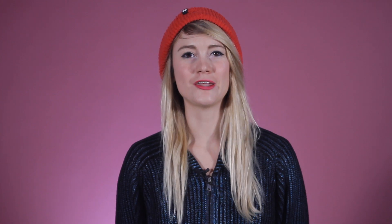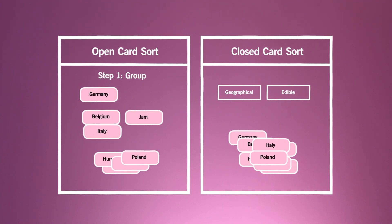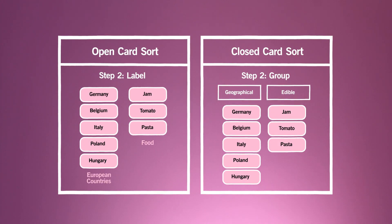Another distinction to make is between open and closed card sorts. In an open card sort, users are free to create their own labels or category names for the groups they've created. In a closed card sort, users are provided with a set of predetermined categories. Open card sorts are the most common method and will tell you more about the user's mental models. Closed card sorts will not show you how users conceptualize a set of topics — it can often feel like you're simply testing the user on their ability to place content in the right category. However, a closed card sort can come in handy if you want to test how logical your existing information architecture is.